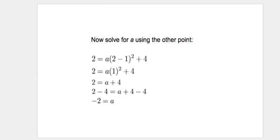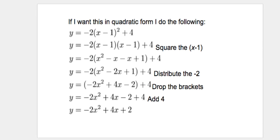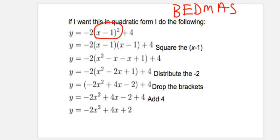Now, if we want to take the vertex form and put it into the quadratic form that we're used to seeing, we just have to do some algebra. I'm following order of operations — BEDMAS — basically squaring the binomial, then collecting like terms and dropping brackets.